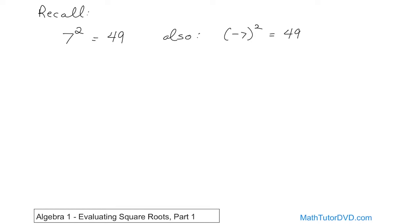So we're going to go backwards and say the opposite of squaring something is the square root of something. So if you take and put the symbol around 49, what you're asking yourself is: here's the number under here — what times itself is going to give me 49? And you already know the answer is 7.